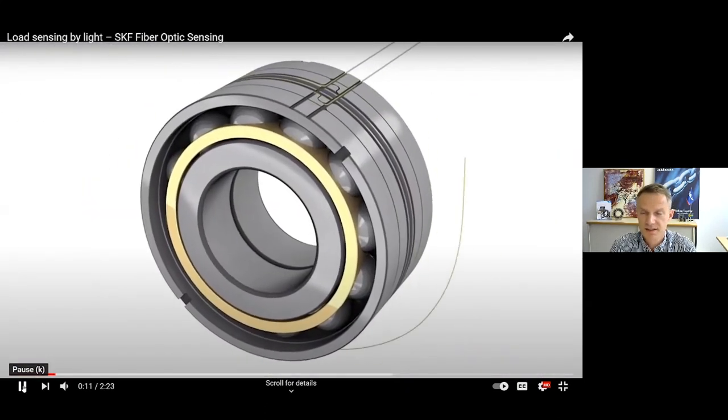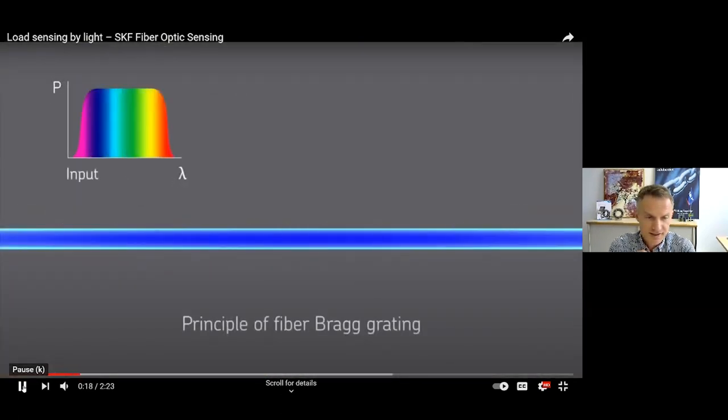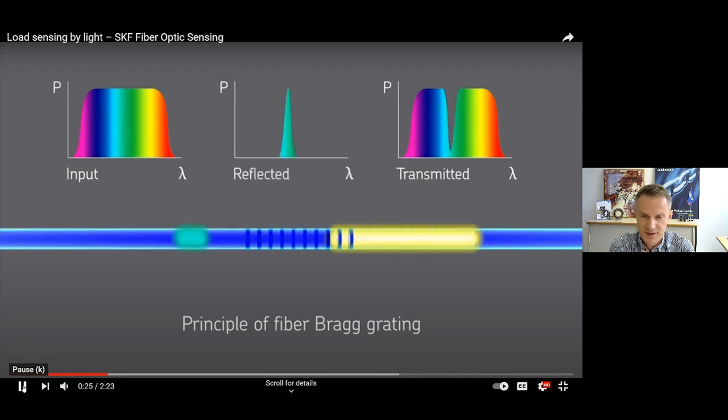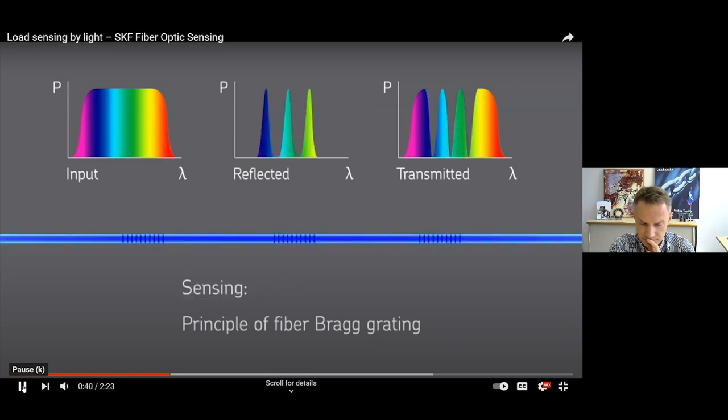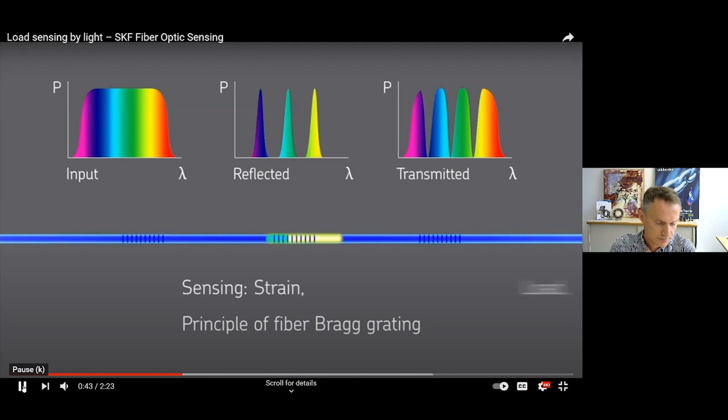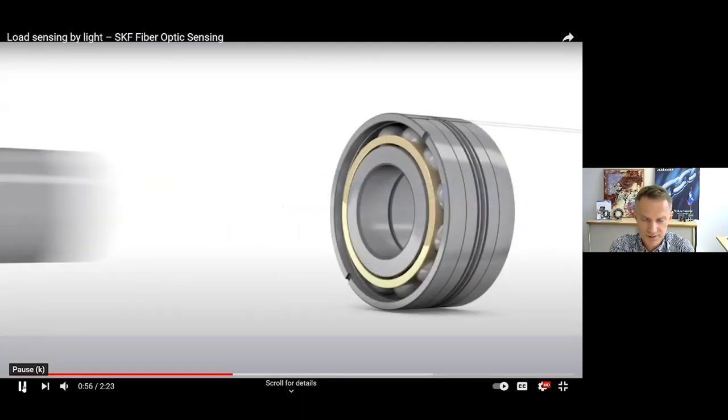This is the fibers that are arranged in a certain way around the bearing. Light is going through the fiber. There is some grating called Bragg grating done on these fibers, which is kind of making some small mirrors into the fiber. Some light is reflected. At this you can measure the elongation of the fiber similar to a strain gauge.